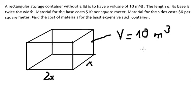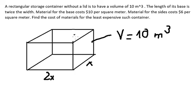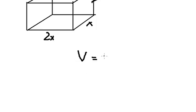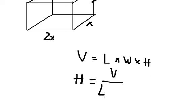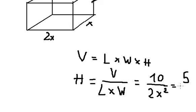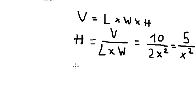If we want to find the height, we have volume equals to the length multiplied by the width multiplied by the height. So we have length that is about 2x, width that is about x, and height we don't know. So we have V divided by L multiplied by width, so this one we have 10 divided by 2x squared. This gives us 5 over x squared.